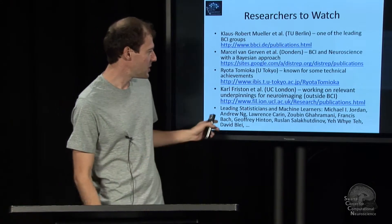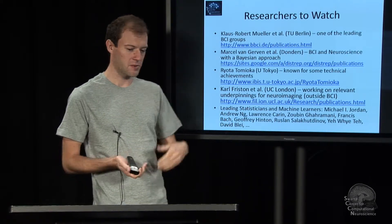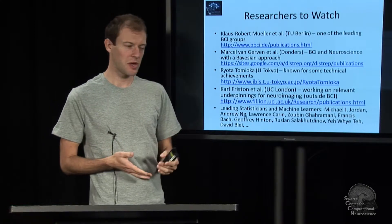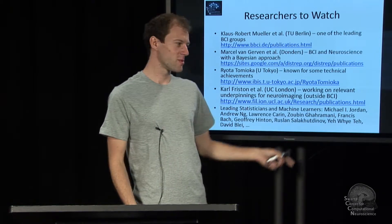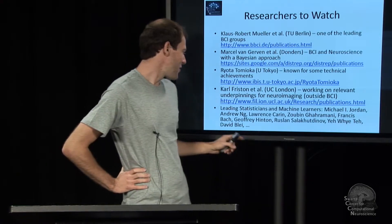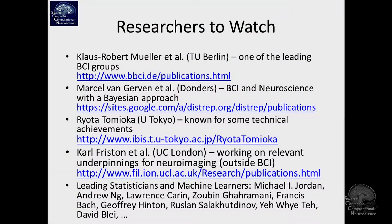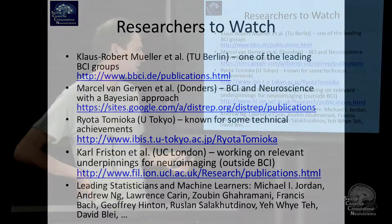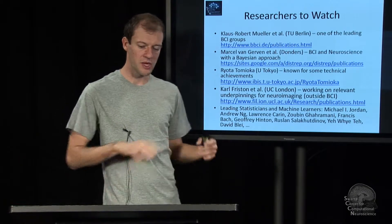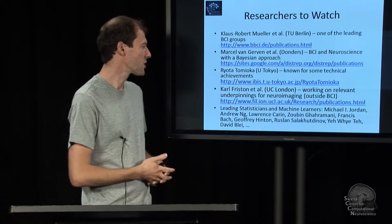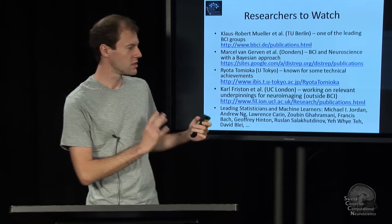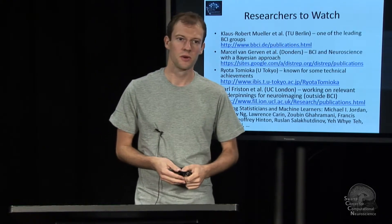There are lots of statisticians and machine learners with publication websites doing really interesting work, including Michael Jordan, Andrew Ng, Lawrence Carin, Zoubin Ghahramani, Francis Bach, Geoff Hinton on neural networks, Ruslan Salakhutdinov, Yee Whye Teh, and David Blei, among many more. It's highly recommended to check their work pages and read some of their papers. There are people strong in the Bayesian area, in sparsity and convexity, excellent statisticians, and people pushing neural networks — all of which is relevant to BCI research and interesting in itself.